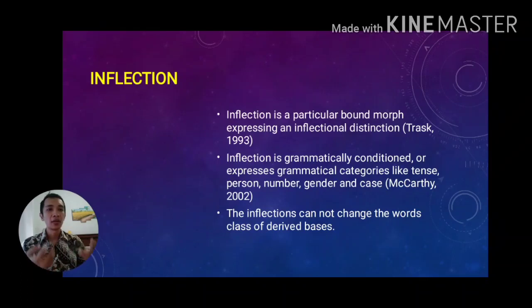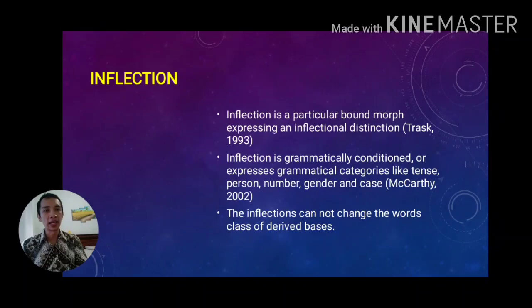So what is inflection? Inflection is a particular bound morpheme expressing inflectional distinctions, according to Trask. There is a contribution of a bound morpheme, specifically a suffix, like '-es' or '-s,' which is added to the root word 'touch' to make 'touches,' or 'box' added by '-es' to become 'boxes.' The suffix works to create the inflectional process.